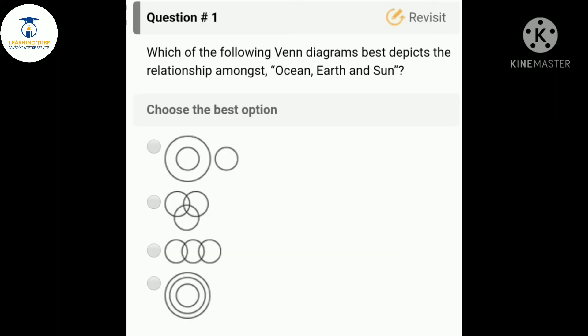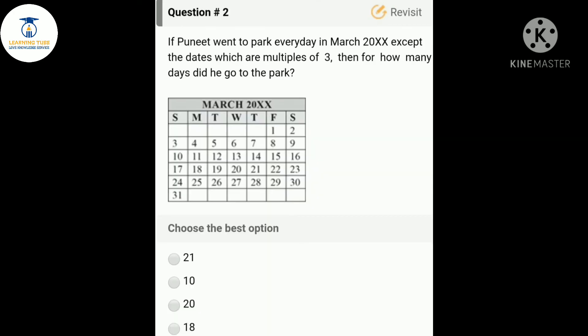The first question is: which of the following Venn diagrams best depicts the relationship amongst ocean, earth, and sun? The correct answer is option A. At first there is a circle which is surrounded by another circle, and here is another circle which is different in position. The smaller circle is ocean, the bigger is earth, and the other circle is sun.